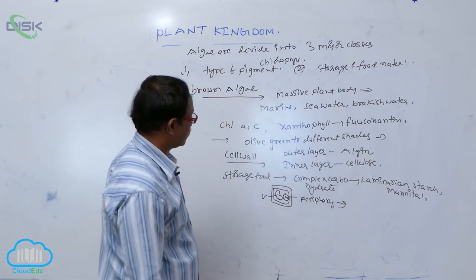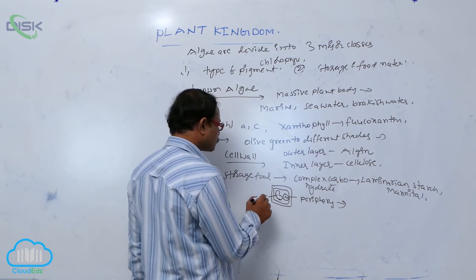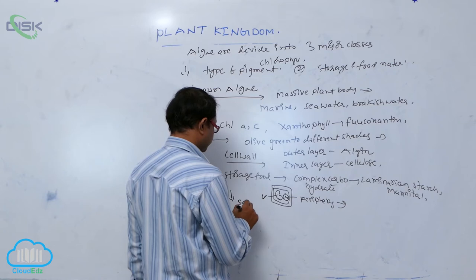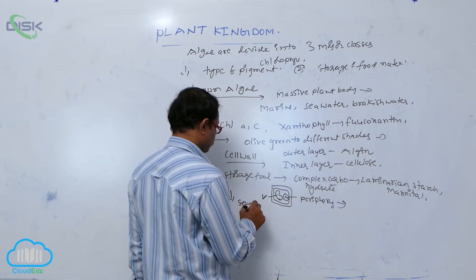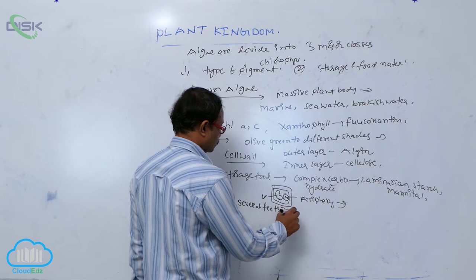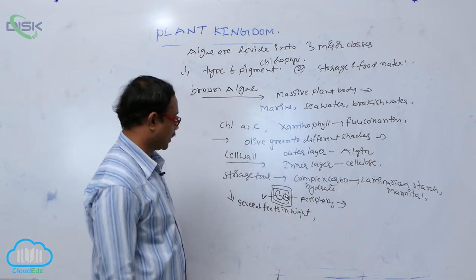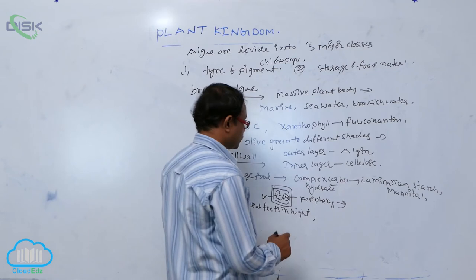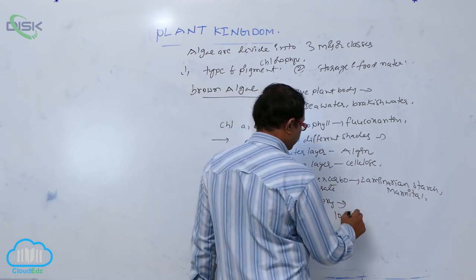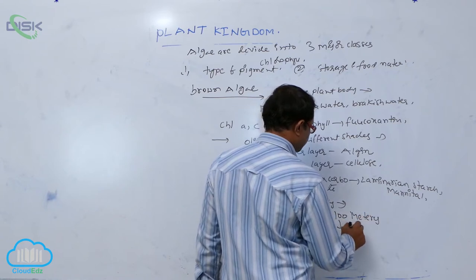Brown algae grow several feet in height — up to 100 meters. These large brown algae are known as kelps.